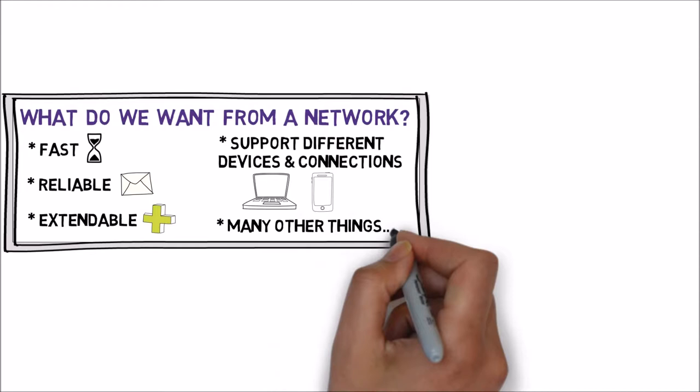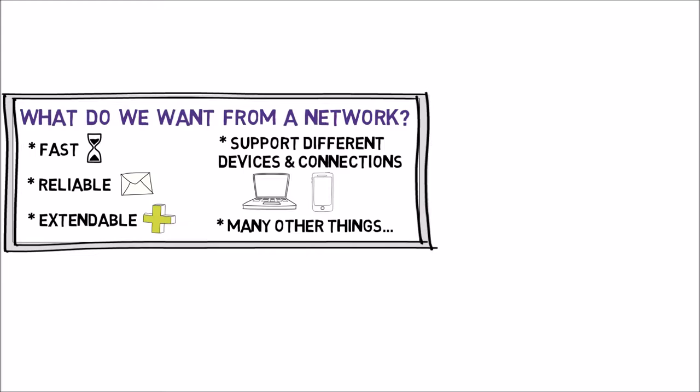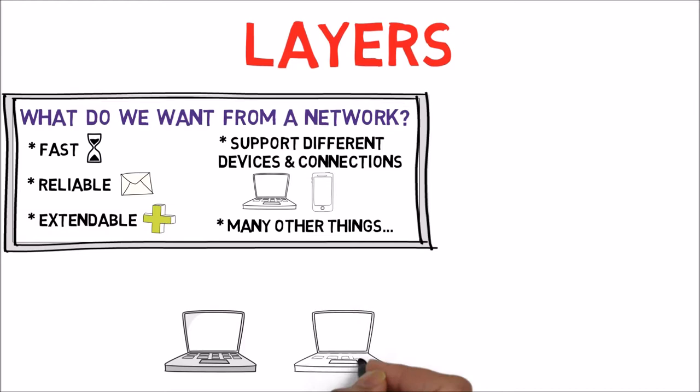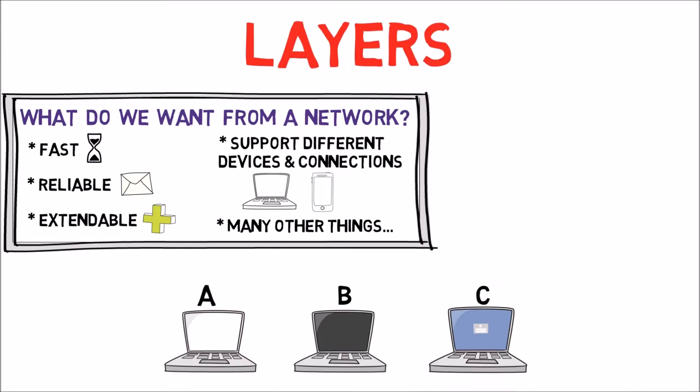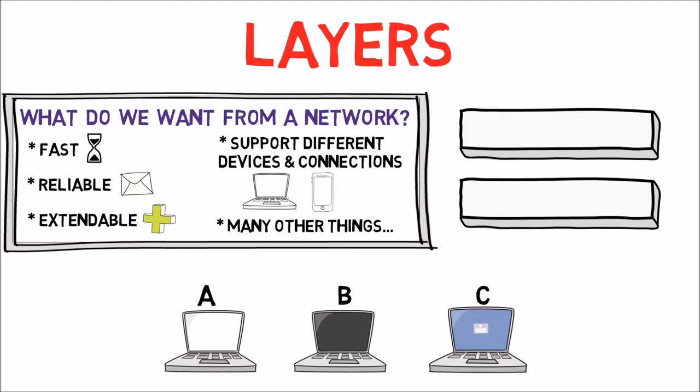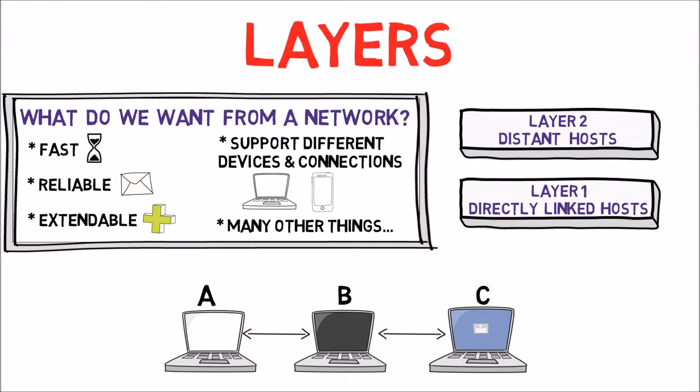In order to simplify things and make networks flexible, communication is divided into two layers. Each layer has its own responsibility — it provides services to an upper layer and uses services provided by a lower layer. Consider this example: layer one is responsible for transmitting data between hosts that are directly connected, such as between hosts A and B, or between hosts B and C. Layer two is responsible for transmitting data between distant hosts — for instance, between hosts A and C.